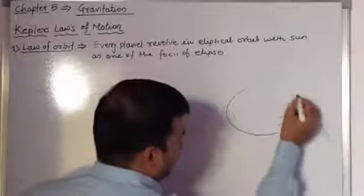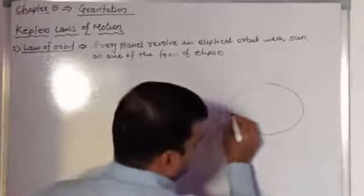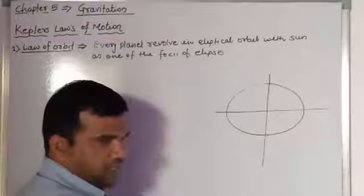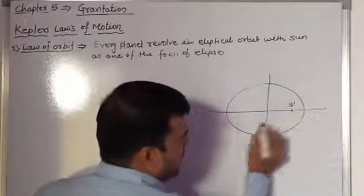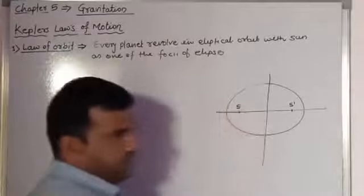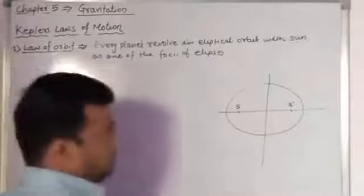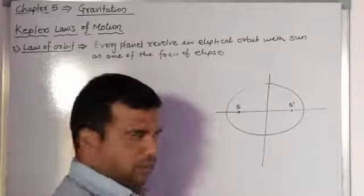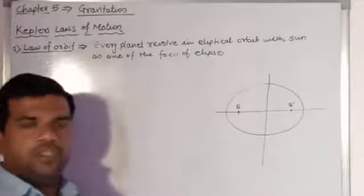Consider this elliptical orbit — this is the major axis and this is the minor axis. S-dash and S are the two foci of this ellipse, with S being the sun and S-dash being the other focus.